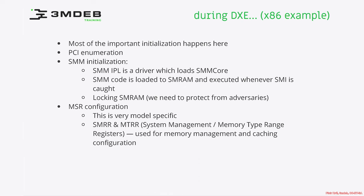During this phase, for x86 architecture, we do the most important initialization of devices. In PI phase, we take care of core foundational features like memory, CPU, and chipset. Now that those key core components are initialized, we can go through the buses, find devices, and load the drivers for those devices — if we have those and if there is a need for exposing them for further phases. PCI enumeration, for example, happens at this stage.